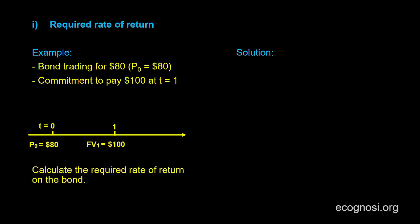So starting off with the required rate of return interpretation, what we are saying over here is that assuming we are in equilibrium and given the future cash flows promised by a certain financial instrument and its price in the market,